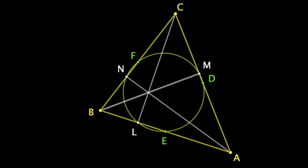These three altitudes of a triangle pass through a single point which we will call H. It is the orthocenter of the triangle.